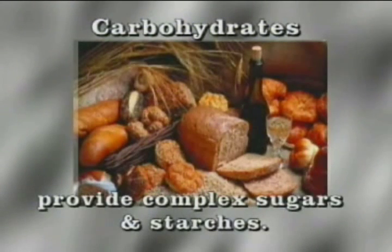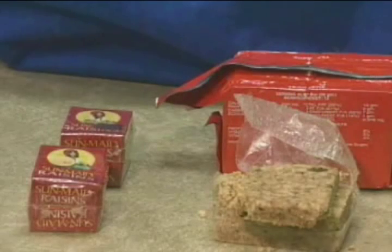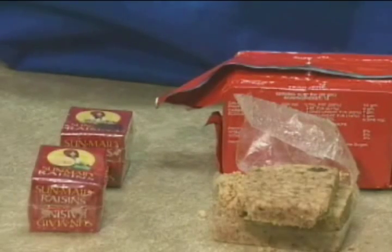Carbohydrates provide complex sugars and starches, which the body utilizes as long-term energy producing nutrients. When assembling your personal survival kit, it is advisable to put nutritional bars or dried fruit in the kit. The body can utilize carbohydrates over the long-term with a minimum fluid loss.